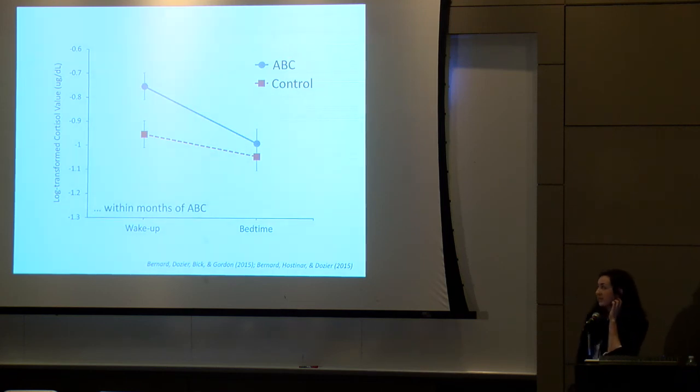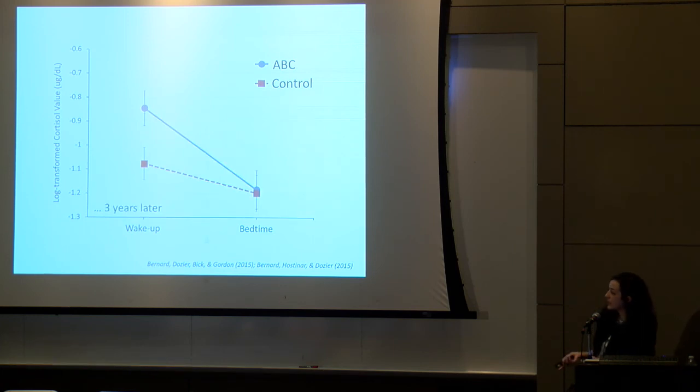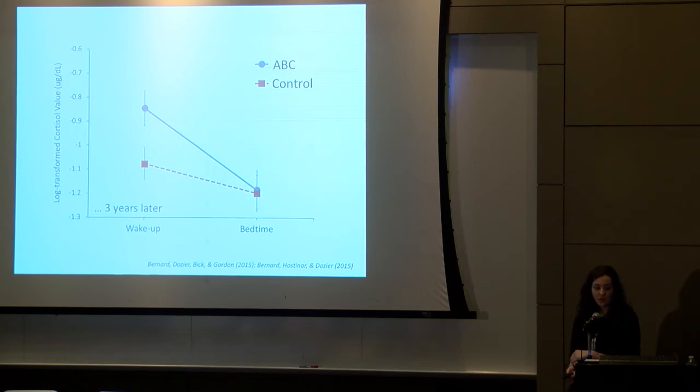In the ABC group, though, and this is within a few months of the intervention, we see that their cortisol rhythms are more normal than compared to the control group with a higher level of waking cortisol. When we follow these kids for years after the intervention, these data now are three years later when the children were about four to five years old, we still see that more normal rhythm of cortisol across the day.